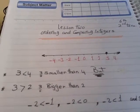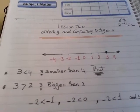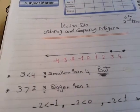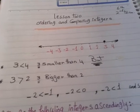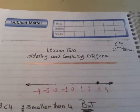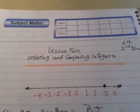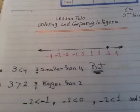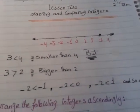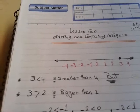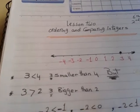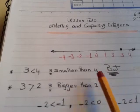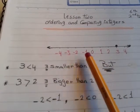Assalamu alaikum warahmatullahi wabarakatuh. Let's continue in primary six math lessons. This video is lesson two: ordering and comparing integers. On the number line, zero is in the middle. All numbers to the right of zero are one, two, three, four... and all numbers to the left of zero are negative one, negative two, negative three, negative four...